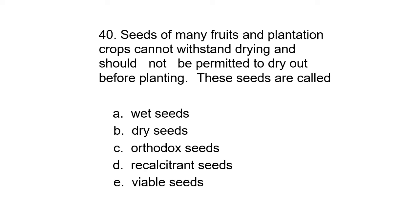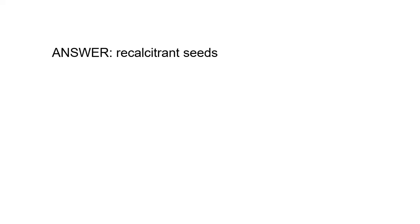Last question, number 40. Seeds of many fruits and plantation crops cannot withstand drying and should not be permitted to dry out before planting. These seeds are called: A. Wet seeds, B. Dry seeds, C. Orthodox seeds, D. Recalcitrant seeds, or E. Viable seeds. The correct answer is Recalcitrant seeds.